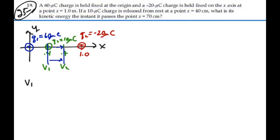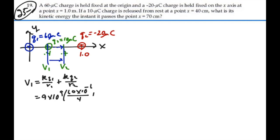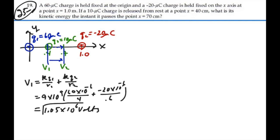V1 is going to equal kq1 over r1 plus kq2 over r2. That equals 9 times 10 to the 9, times 60 micro coulombs divided by 0.4 meters, plus negative 20 micro coulombs divided by 0.6 meters — because the distance from x=1 to x=0.4 is 0.6 meters. Calculating that gives 1.05 times 10 to the 6 volts. That is the potential at point 1.